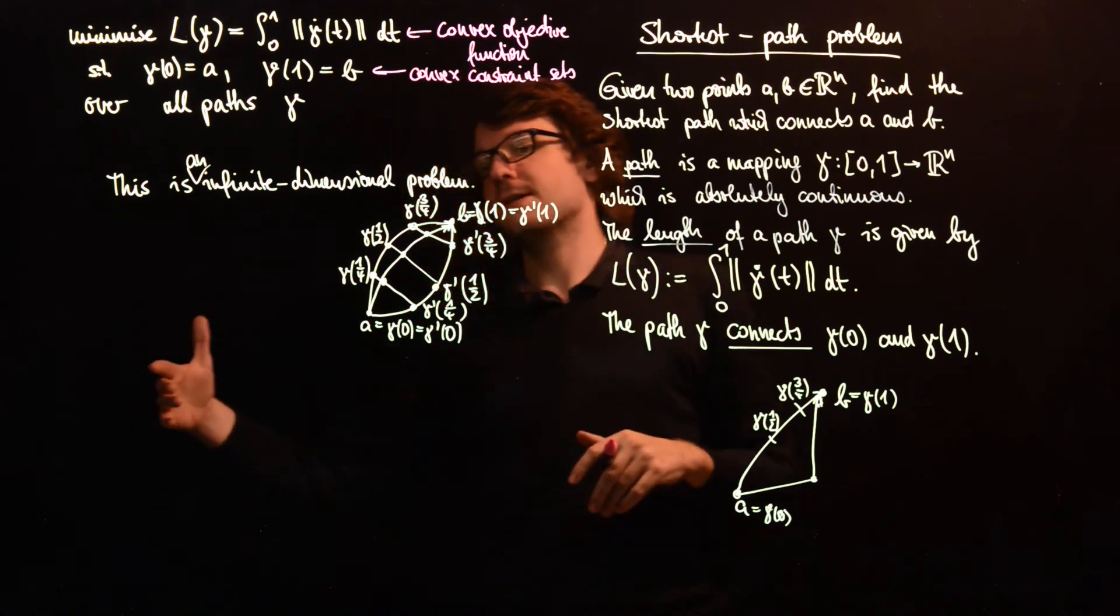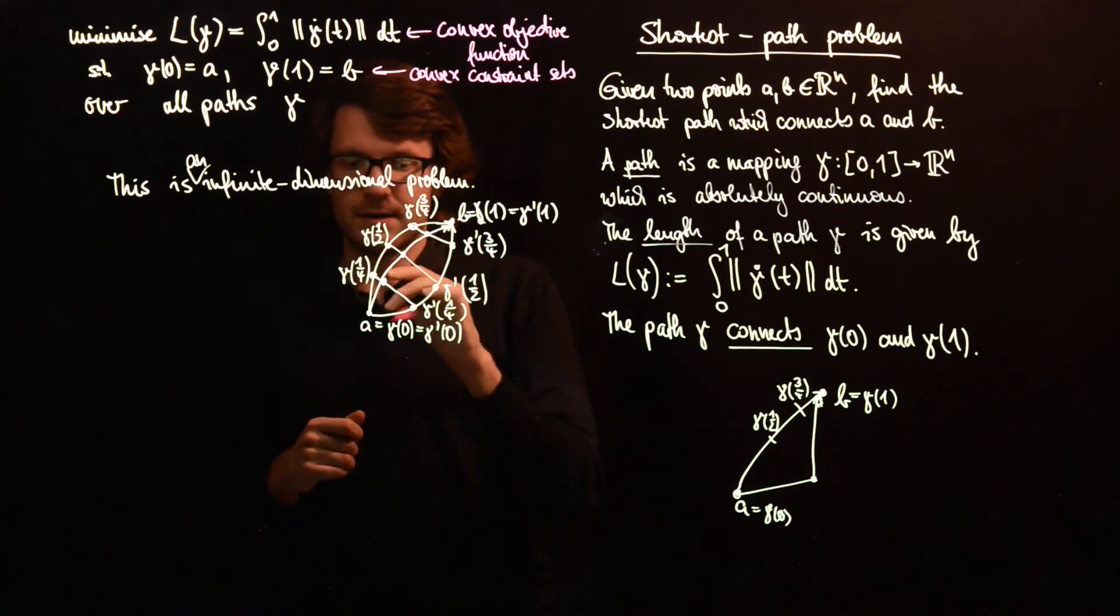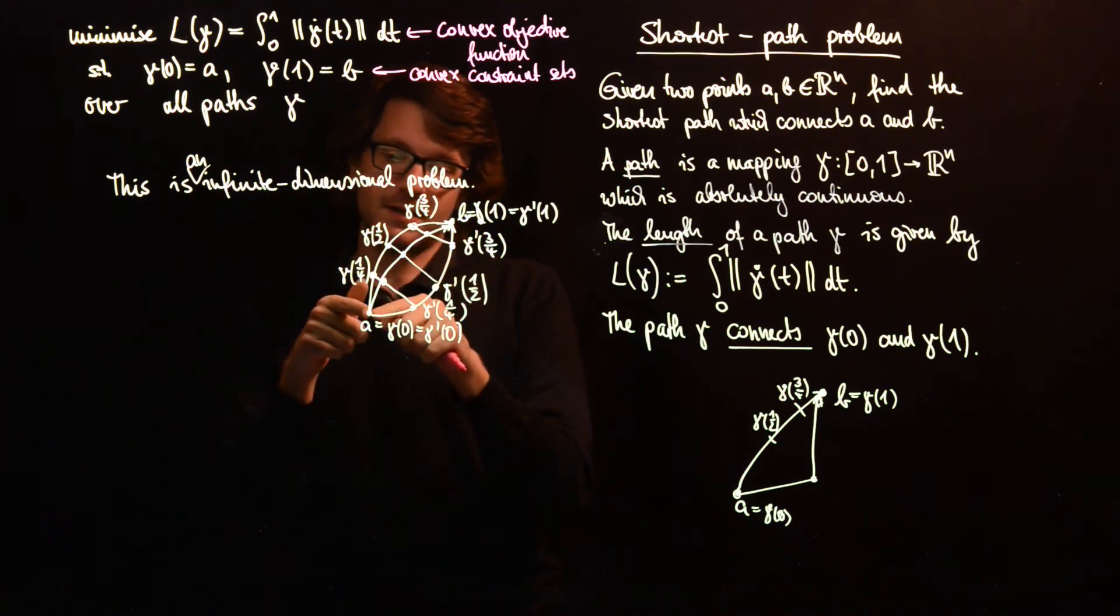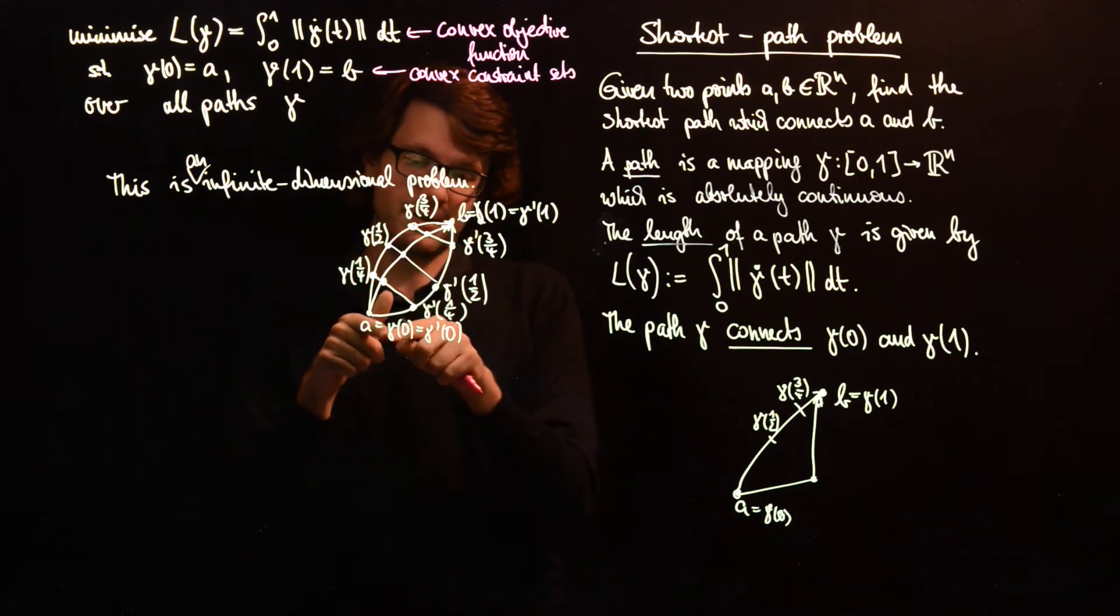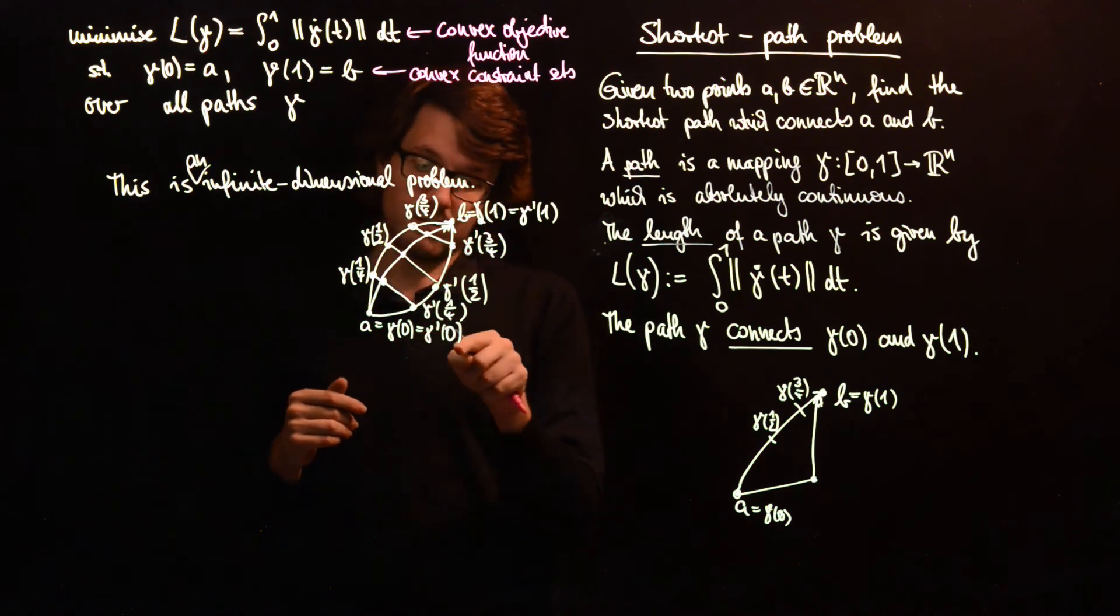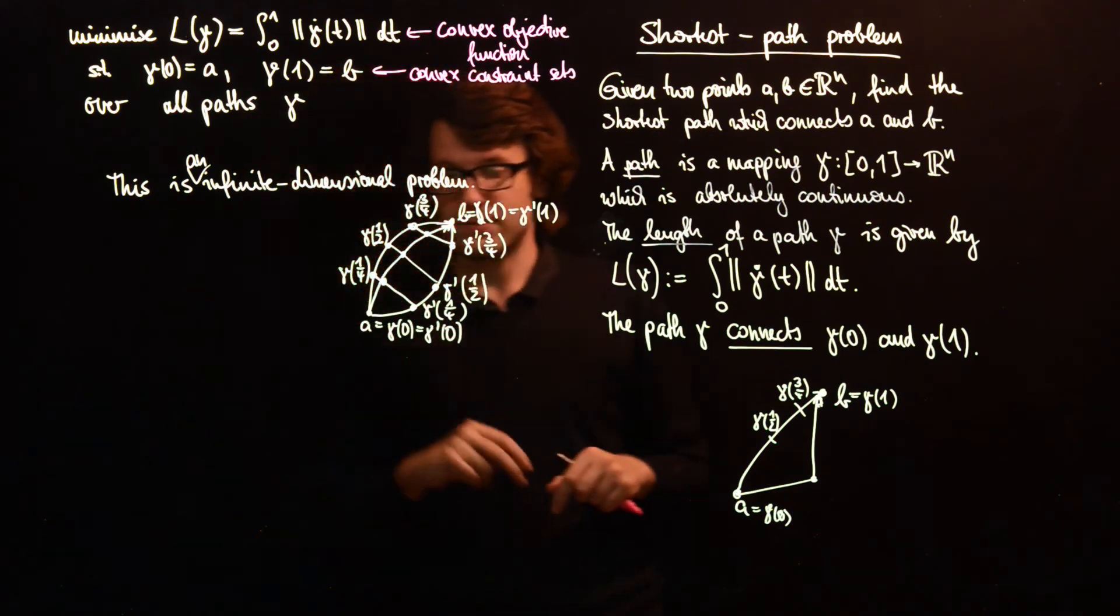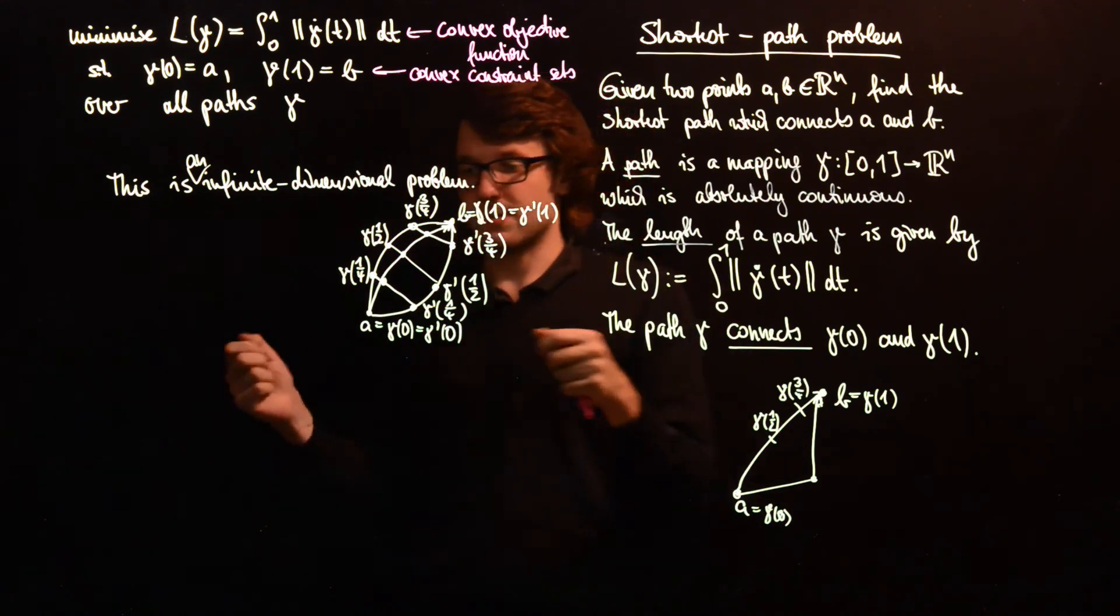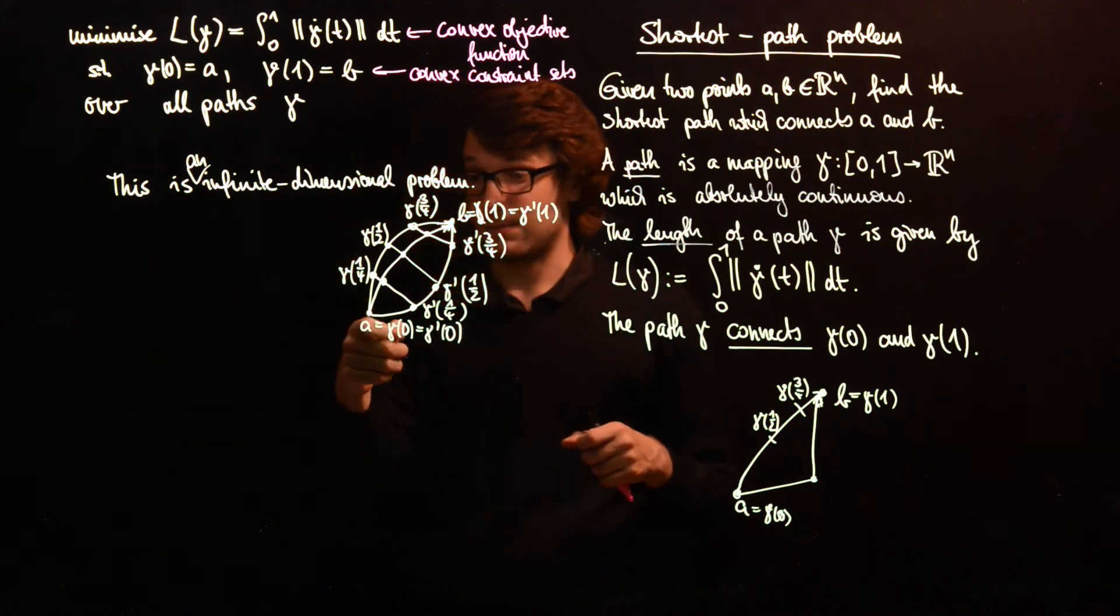Why is this convex? That's very easy to see. Because, for example, because if you have two paths, which both start in A, and you form the mixture, then the mixture path will have the same starting and end point as those, both of those two have. That's rather easy to see. If you take the mean between those two points, then this will still be A.